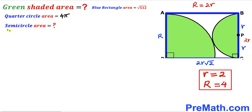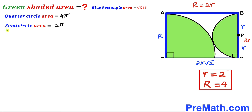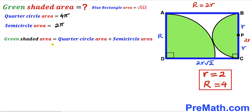Now let's calculate the area of the green shaded semicircle. Using the area formula — area = πr² — the semicircle area is πr²/2. With lowercase r = 2: π × 4 / 2 = 4π / 2 = 2π. So the area of the green shaded semicircle is 2π.